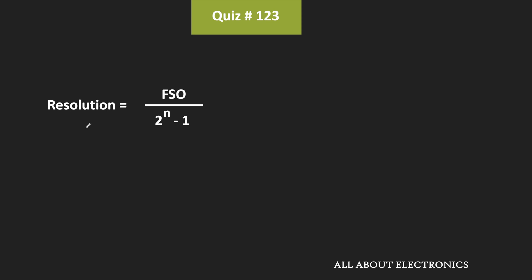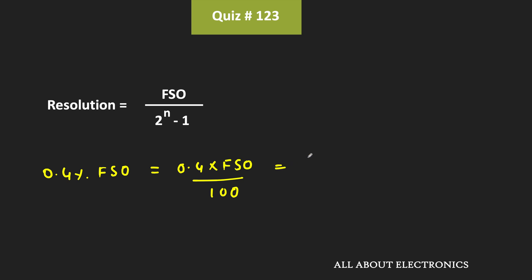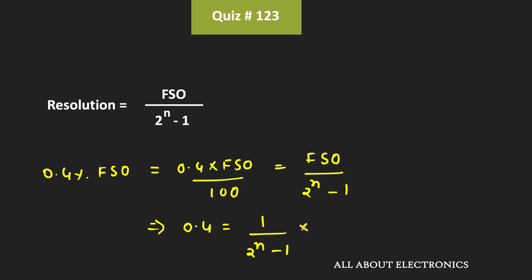Since the resolution is given in terms of percentage, this resolution is equal to 0.4% of the full scale output voltage, which equals 0.4 times the full scale output voltage divided by 100. That should equal the full scale output voltage divided by 2 to the power n minus 1. Simplifying, the percentage resolution can be given as 1 divided by 2 to the power n minus 1, times 100.